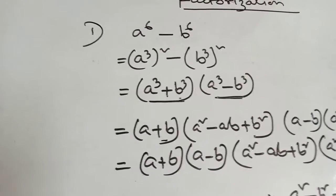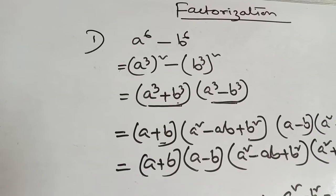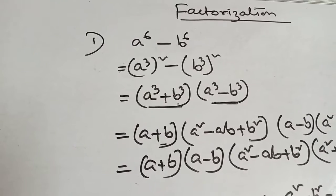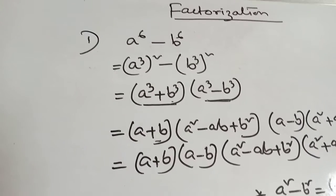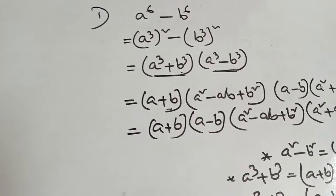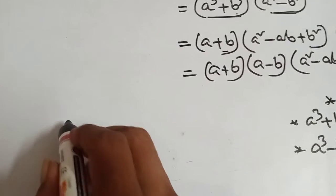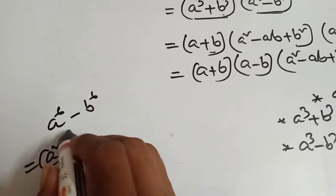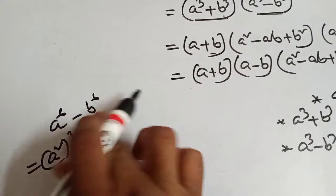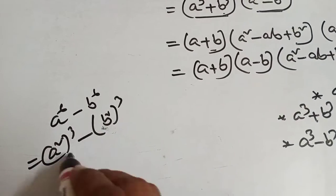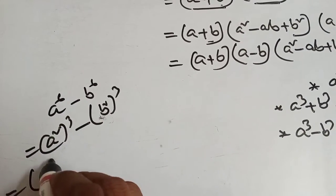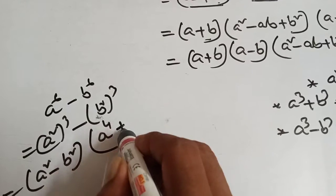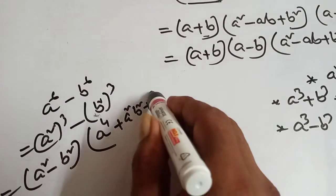You can also break A to the 6 minus B to the 6 as A square cube minus B square cube. If you break it this way, apply A cube minus B cube formula: A minus B into A square plus AB plus B square, where A means A square and B means B square. So it becomes A square minus B square into A to the power 4 plus A square B square plus B to the power 4.